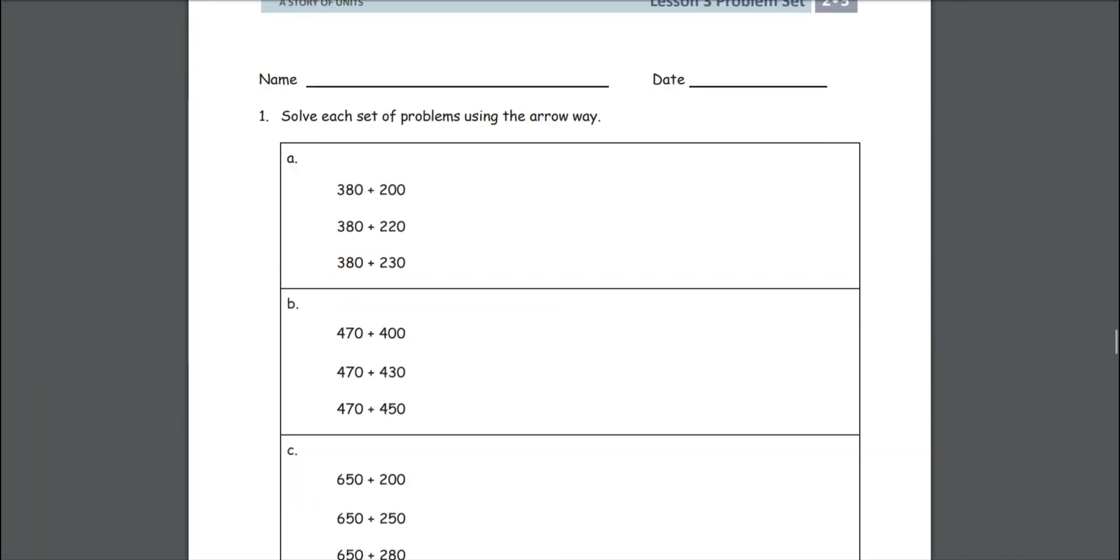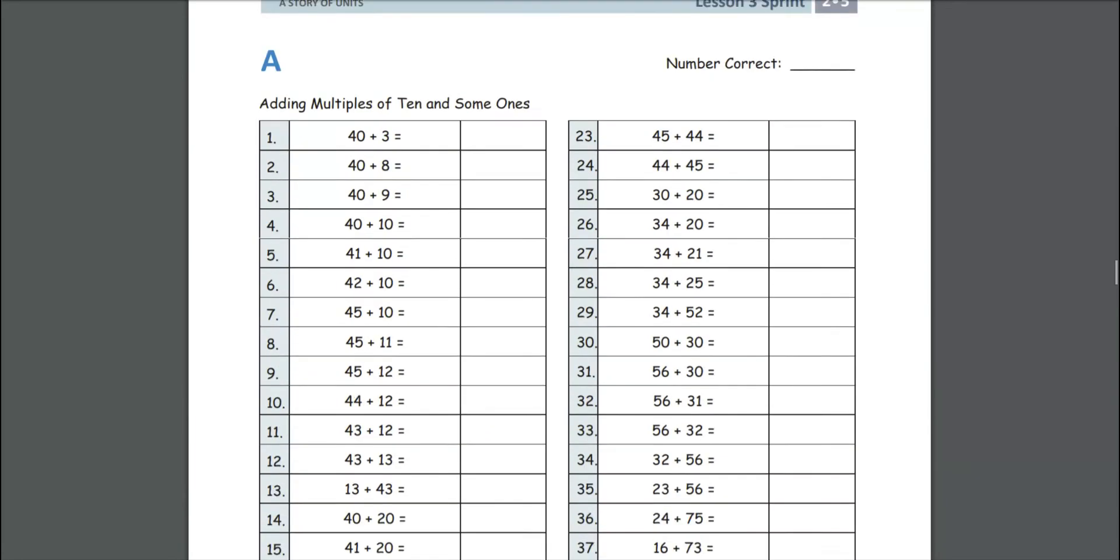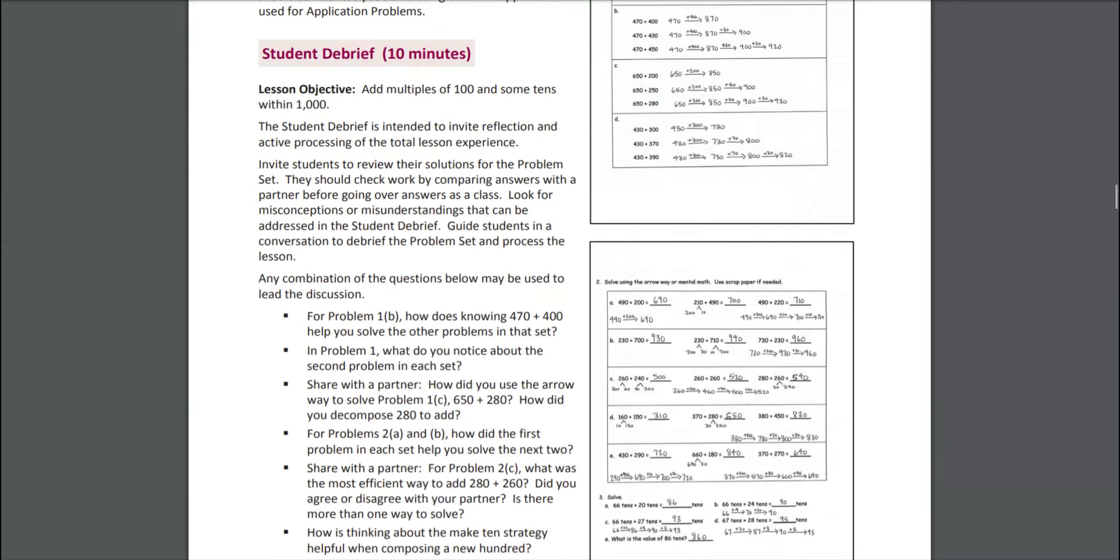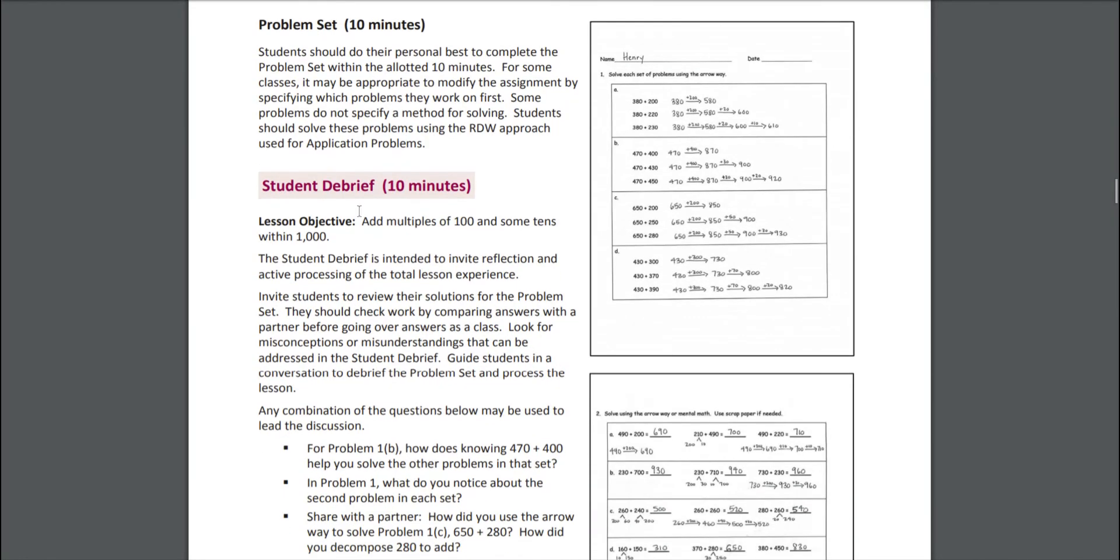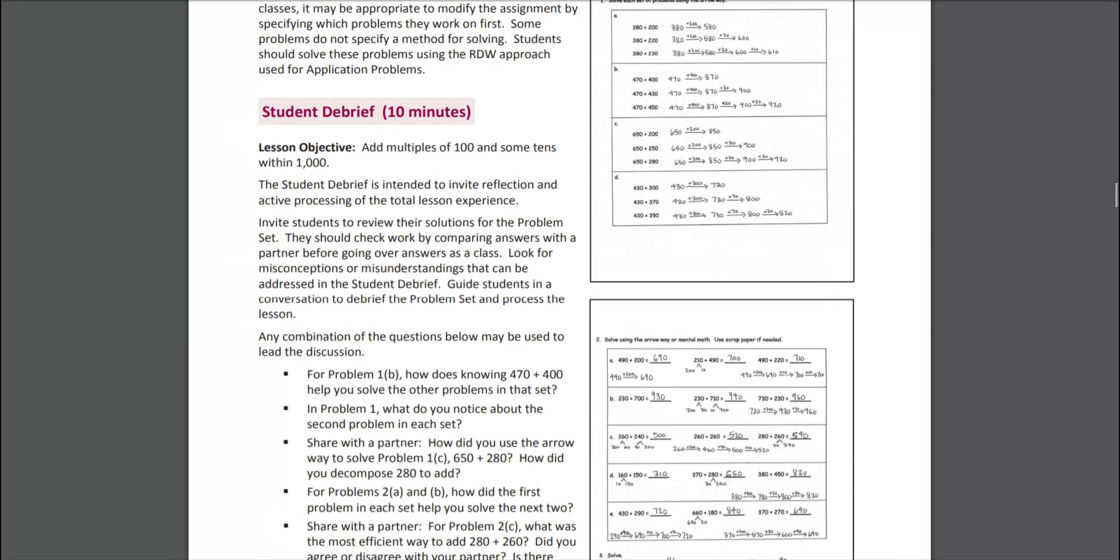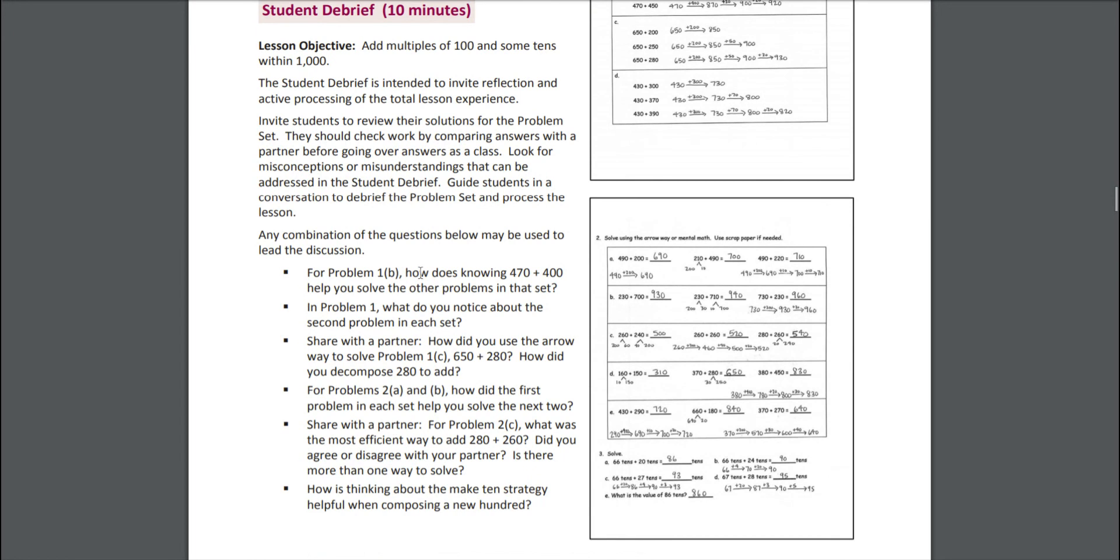All right. So now our kids are working maybe in groups and pairs or independently through their problem set. All right. When that 10 minutes is up, you're going to jump into your debrief. This is where you're going to restate your lesson objective and maybe some success criteria if you establish them. All right. This is what it looks like to be successful. And this is where you can also ask some questions. And the program does give a good list of example questions that you can ask.